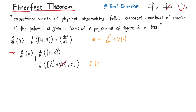Next, the commutator of p-squared with x can be evaluated to minus 2i h-bar p. This means the time derivative of the expectation value of the position operator is given by 1 over m times the expectation value of the momentum operator.